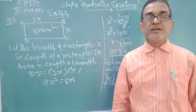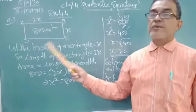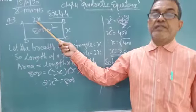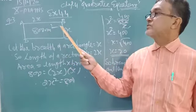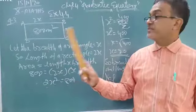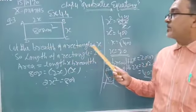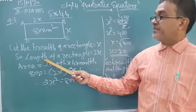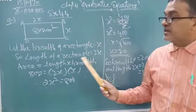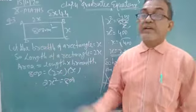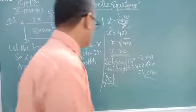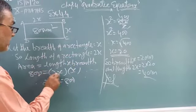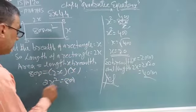If it is possible to design a rectangular plot, if the length of this rectangular cross is twice its breadth. Suppose, let the breadth of a rectangle is x. So length is twice means 2x. What is the area given? 800 square meters. So area is equal to length multiplied by breadth. 800 equals 2x multiplied by x.